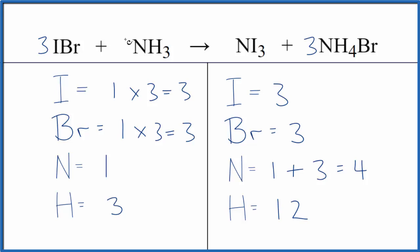It looks like if we put a four in front of the ammonia, one times four, that would balance the nitrogen atoms. And then three times four, that would give us 12. And we'd be done.